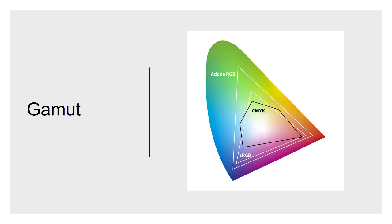One of those limitations of CMYK is its gamut — it doesn't have as large a gamut as RGB. Part of the reason is that paper and inks are imperfect; they don't reflect 100% of the light hitting them. Some yellow ink on paper is not going to reflect 100% of the yellow light from the visible spectrum. You're never going to get quite as bright a reproduction as you would with emissive or additive light systems.